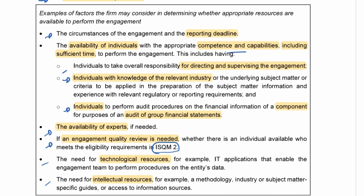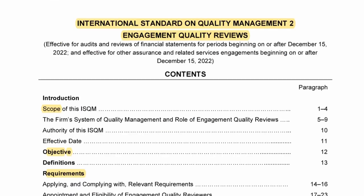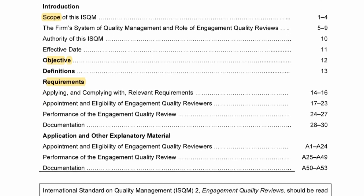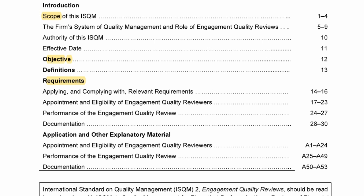These are the very important elements of ISQM1. Let's go to ISQM2 — engagement quality reviews. The scope, objective, and requirements are all highlighted. I want to focus on the appointment and eligibility of the engagement quality reviewer, so let's go to paragraph 17.